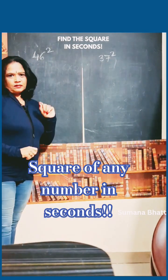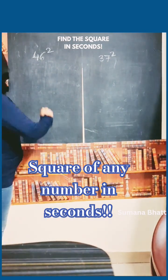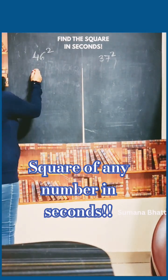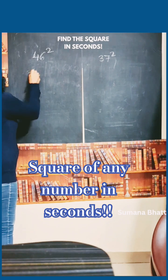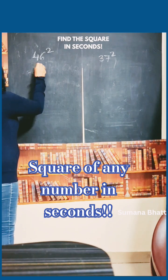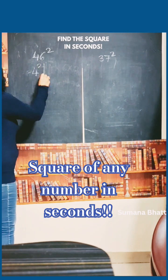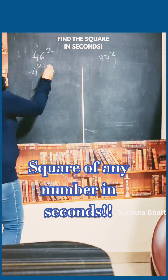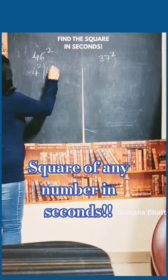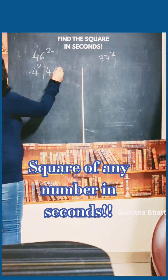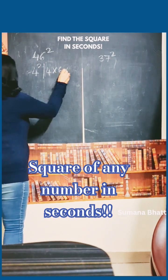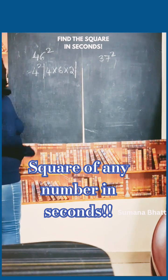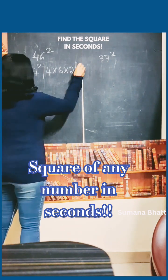46 square. See how easily we can do it. First we have to write it like this: write 4 square, draw a line, write 4 into 6 into 2, and write 6 square.